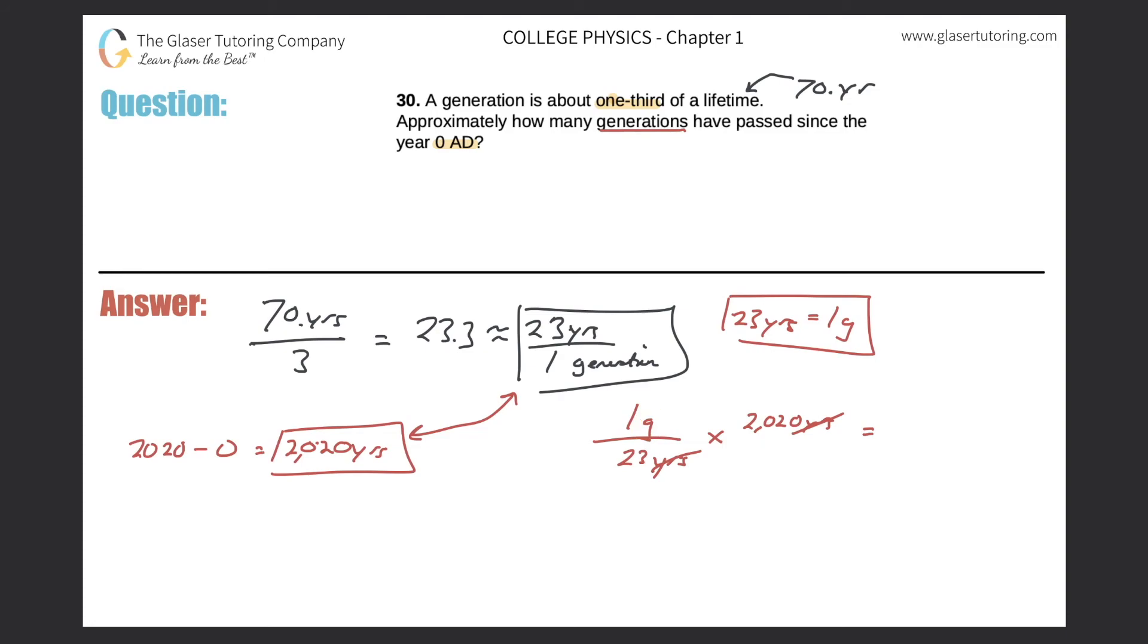So 2020 divided by 23. And that works out to about 87.8. Okay. Let me just change the color. 87.8 generations. Now, again, since there's two significant figures, let's round that to about 88 generations.